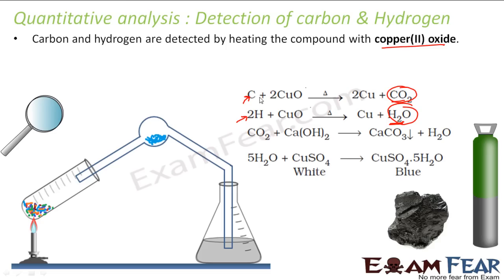An organic compound may have carbon, hydrogen, nitrogen, or anything. Whatever amount of carbon was in the organic compound will react with copper oxide to form carbon dioxide. We can easily find the carbon dioxide. What we do is: we heat the organic compound, and whatever carbon it had gives carbon dioxide. We absorb this carbon dioxide in calcium hydroxide, and from that amount we can find the amount of carbon.